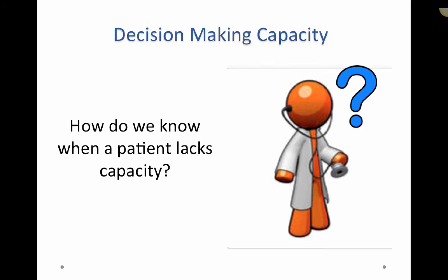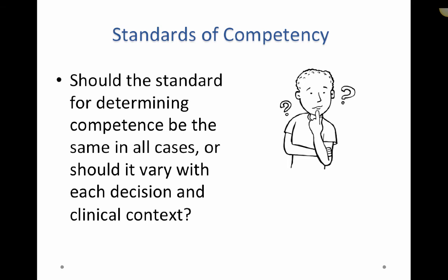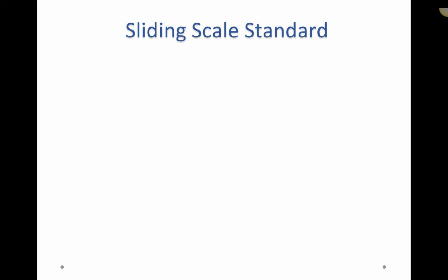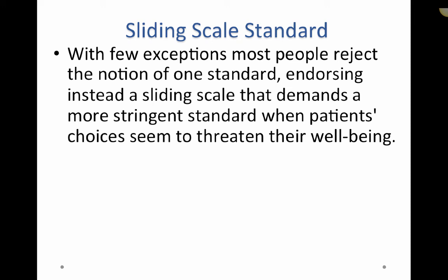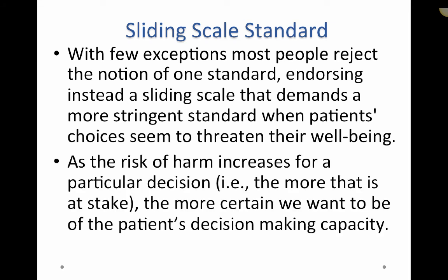The question is: how do we know when a patient lacks capacity? I would like to discuss the concept of standards of competency. Should the standard for determining competence be the same in all cases, or should it vary with each decision and clinical context? Several commentators have introduced the concept of a sliding scale standard for competency. Most people reject the notion of one standard, endorsing instead a sliding scale that demands a more stringent standard when patients' choices seem to threaten their well-being. As the risk of harm increases — the more that is at stake — the more certain we want to be of the patient's decision-making capacity.